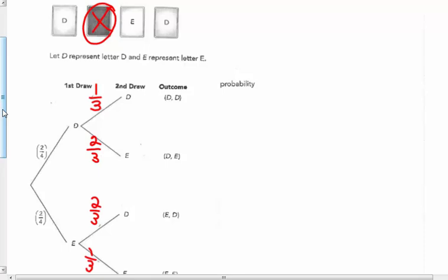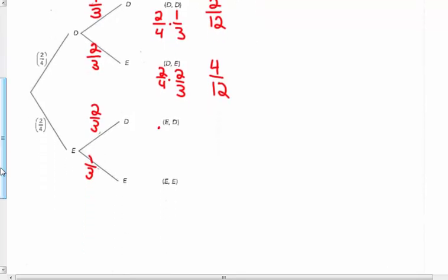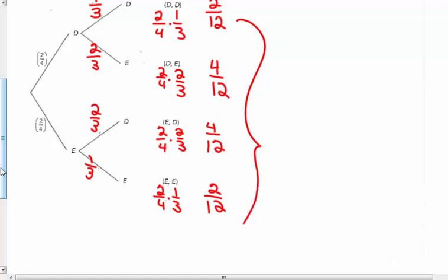So getting DD is two-fourths times one-third, which is two-twelfths. Getting DE is two-fourths times two-thirds, which would be four-twelfths. E and then D would be two-fourths times two-thirds, which would be four-twelfths. And the last one, E and then E, would be two-fourths times one-third, which would be two-twelfths. Checking to make sure I have all of them correct, two plus four plus four plus two does give me twelve-twelfths. So I do have all of my possibilities listed there.